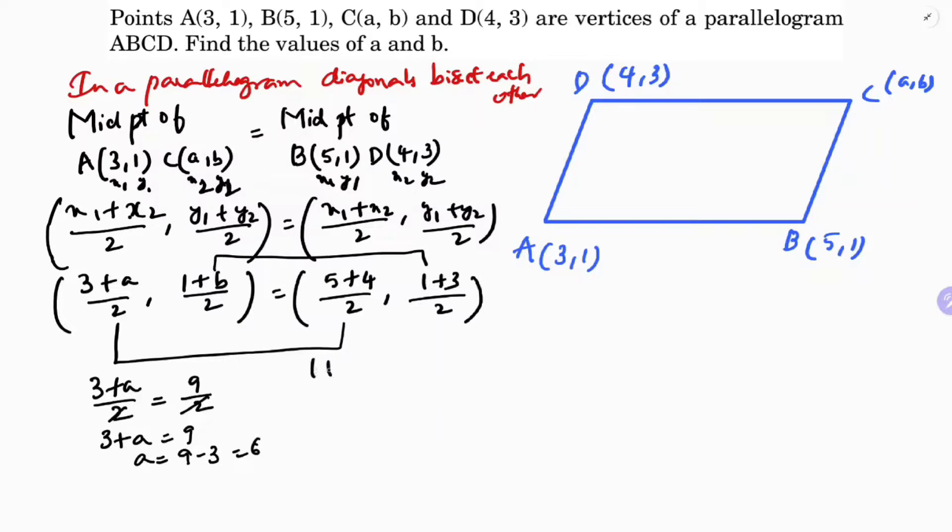In the same way, (1 + b)/2 = (1 + 3)/2 = 4/2. Cancel the 2s. 1 + b = 4. So b equals 4 minus 1 which is 3. Therefore, the value of a is 6 and b is 3.